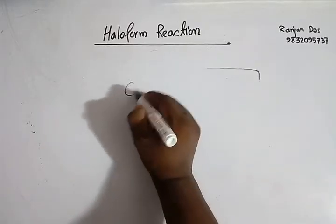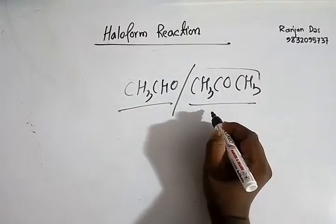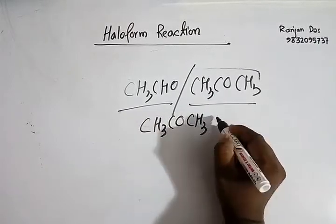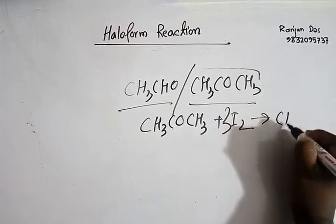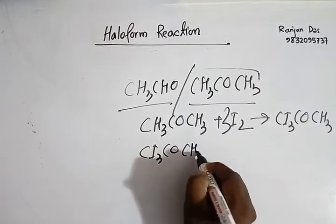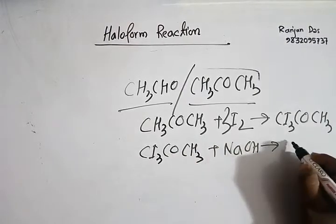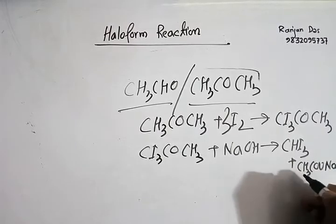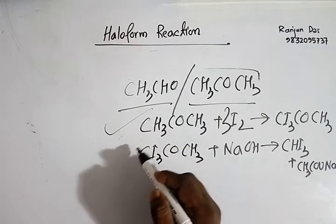Instead of ethanol, if we take acetaldehyde or acetone CH3COCH3, the haloform reaction will be in two steps. For acetone, the first step will be halogenation reacting with I2, it will be CI3COCH3. And in the second step, CI3COCH3, that is triiodoacetone, on reacting with NaOH, that is hydrolysis reaction, we are getting CHI3 and CH3COO-Na sodium acetate or sodium ethanoate.